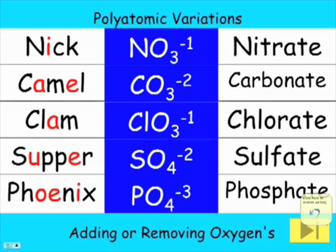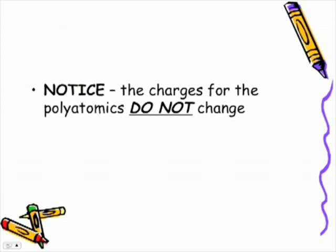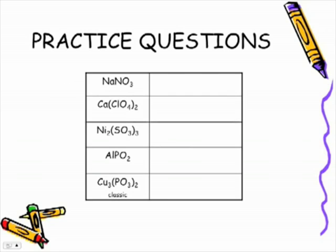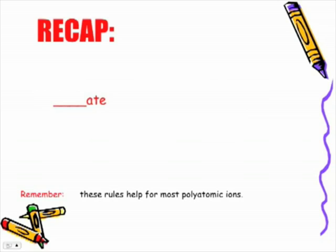You have an idea - if we remove any of the oxygens, ITE ending. If we add an oxygen, we keep these polyatomic names as is and we add PER. One thing to notice is that the charges for the polyatomics do not change. We add oxygens but the charge does not change at all.